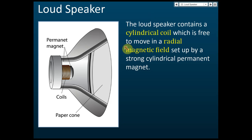Loudspeakers operate under the same concept — not a moving coil, but a current-carrying conductor in a magnetic field. For a loudspeaker, there are two magnets: one at the side and another at the center. If the side magnet is a north pole, the center will be the south pole, creating a magnetic field between the two magnets. There is also a coil — a current-carrying coil — placed within this magnetic field.